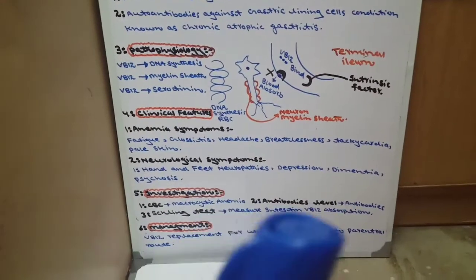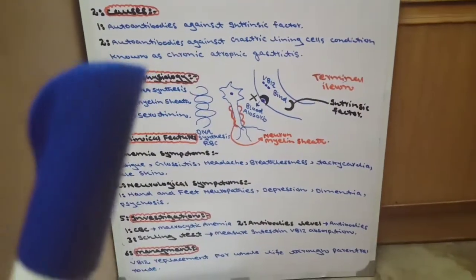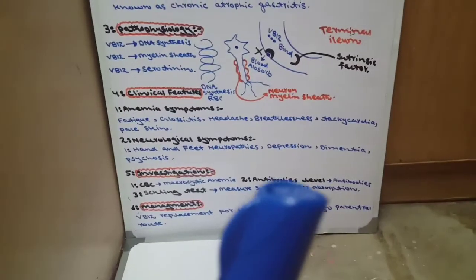Antibody levels: we check for antibodies - either intrinsic factor antibodies or gastric lining antibodies. These two antibodies will be present.